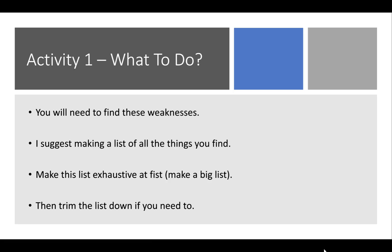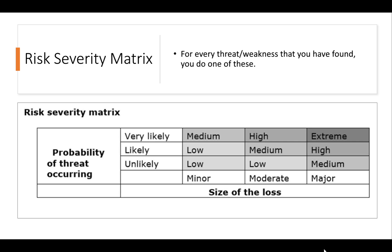For Activity One, after reading through the scenario you'll need to find the weaknesses. Pick out as many weaknesses as you can — I suggest making an exhaustive list of everything you find, then trimming it down if needed. Note down everything that could potentially be an issue. I would say between six and eight is a good number, but start by making your list exhaustive. As soon as you see something that could be a potential weakness, write it down — you can always remove it later.